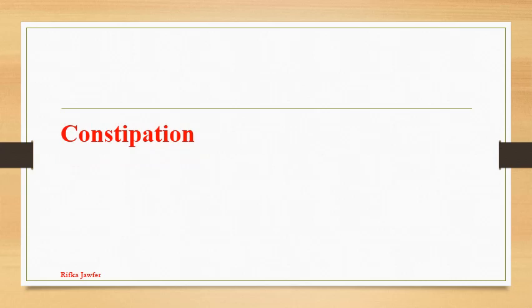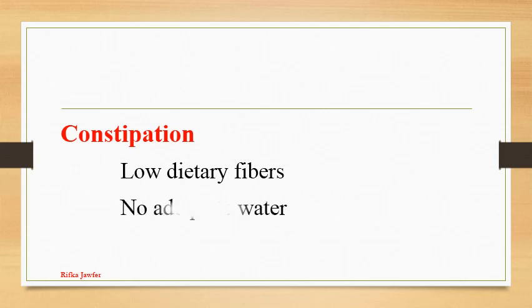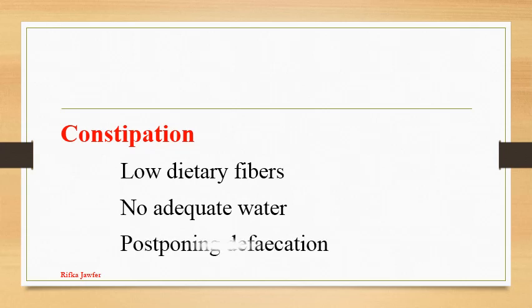Next, constipation. Difficulty in defecation due to hardening of fecal matter is called constipation. It is caused due to excessive absorption of water. The reasons are consumption of food with low dietary fibers, not taking the required volume of water, and postponing defecation. Constant constipation may cause hemorrhage.